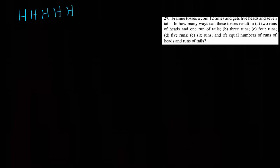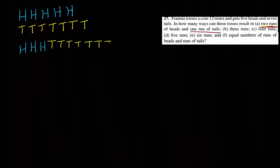So we're going to have 5 heads and 7 tails. If we have 2 runs of heads and 1 run of tails, then that means that all of the tails have to be together. So one example could be something like: some heads, then all the tails, then all the heads. So the question is: how many ways can this happen?